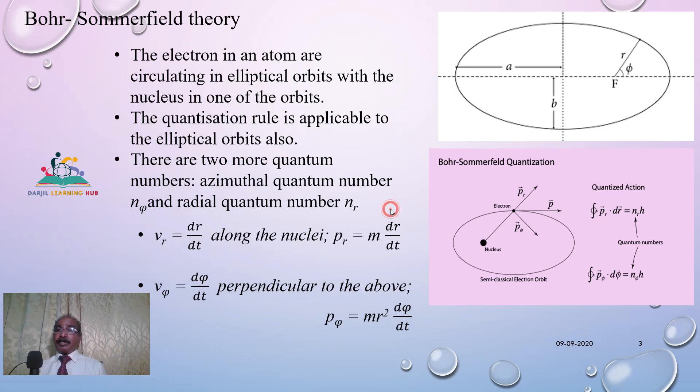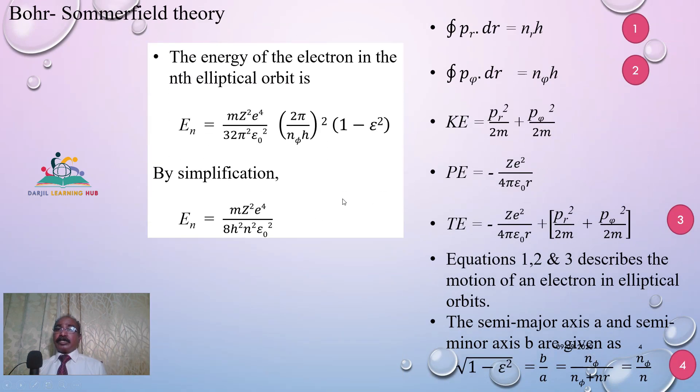Keeping that in mind, we can have these two equations. We can find out that kinetic energy of the electron will be equal to p_r²/2m plus p_φ²/2m. Similarly, the potential energy is what we have already studied. Therefore, summing up, the total energy is given by equation number 3.